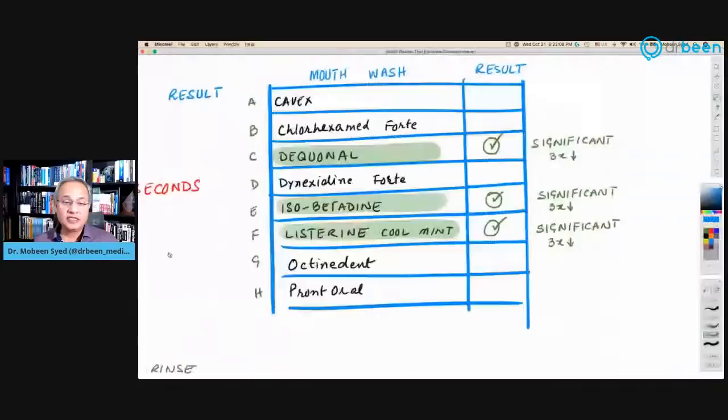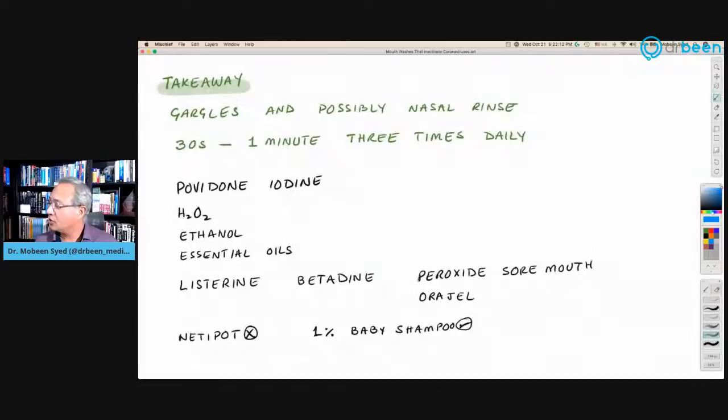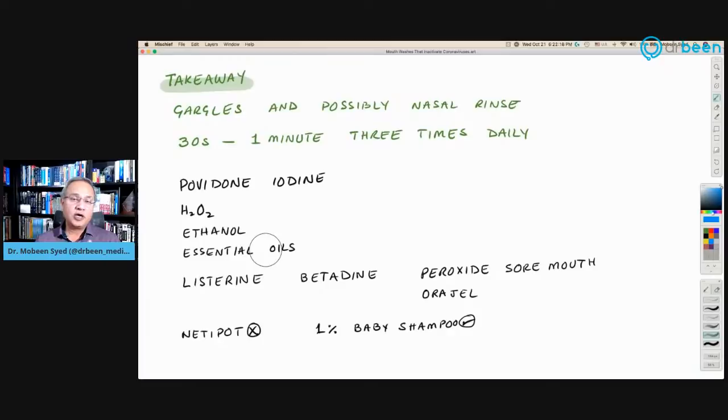So what is our takeaway from this all? The takeaway is that please, if you are on prophylaxis, do mouthwashes. And if you are going, if you have gone out and you have come back and you have any doubt that you might have become exposed, it is great to do the mouthwash. It is actually a good thing. It is a good healthy habit to have. I need to do this as well. So gargles and possibly nasal rinse. 30 seconds to one minute daily, three times. Iodine is useful. Hydrogen peroxide is slightly less useful. Ethanol is also very useful. Essential oils are less useful. Listerine and iodine are very useful. I would say the best are iodine and Listerine. Iodine is, I just showed you the study, iodine is also used in human study and has proven useful. So I would put iodine at the top and then Listerine and then the rest. Neti pot did not do much. 1% baby shampoo did something as well.